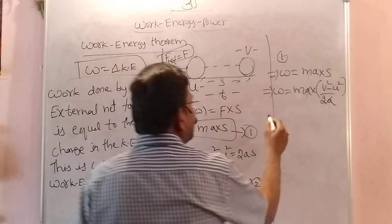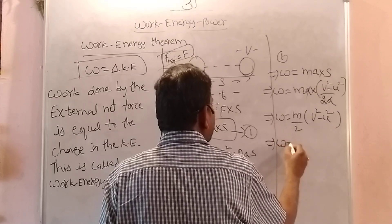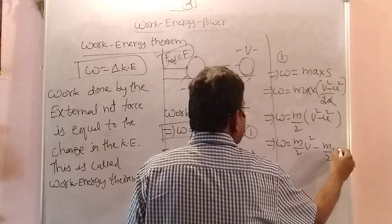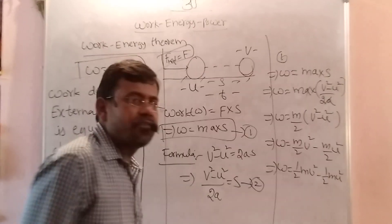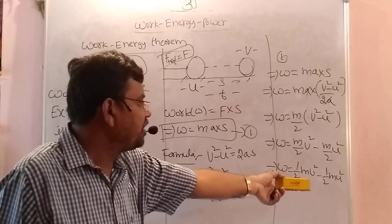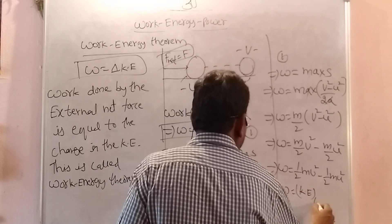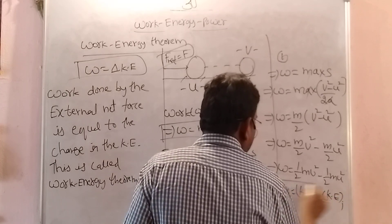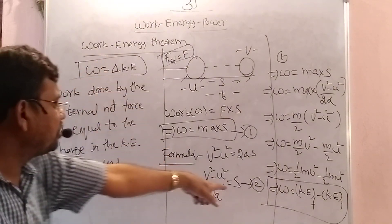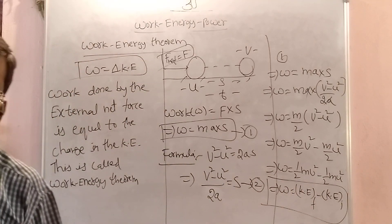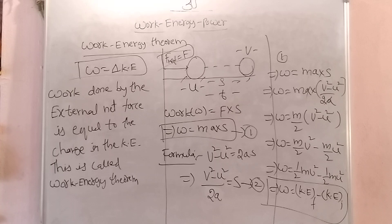The A cancels. So finally, work equals M divided by 2 into (V² minus U²). Otherwise write this as W equals half MV² minus half MU². Half MV² is the kinetic energy with final velocity V — so it is the final kinetic energy. Half MU² is the initial kinetic energy. So work equals final kinetic energy minus initial kinetic energy — that is, the change in kinetic energy. So work done by the external net force equals change in kinetic energy. This is the work energy theorem, giving the relation between work and energy.